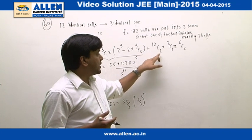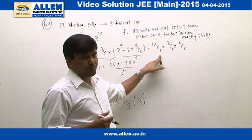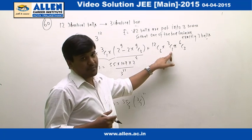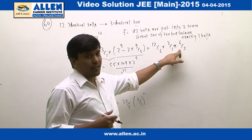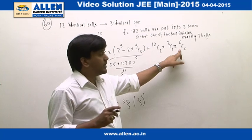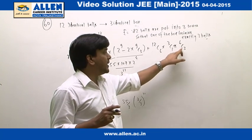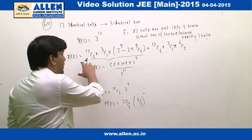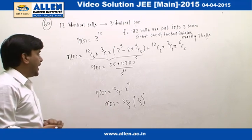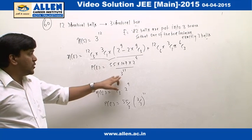We can see we are selecting 6 balls by 12C6 multiplied by 3C1 for a box, and then the remaining 6 balls into the 2 boxes as 3-3 by 6C3. So this is the actual amount of n(E), and when we calculate this probability, this is going to be this. Now, we can see this option does not match.